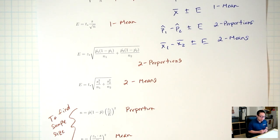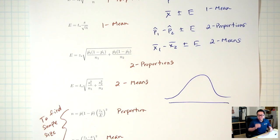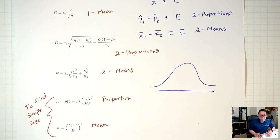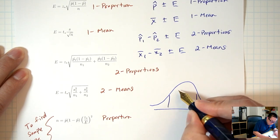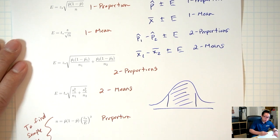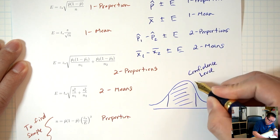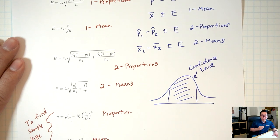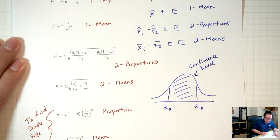All of these formulas involve either a z-star or a t-star. They all involve this picture — the same one we've been drawing for the last four or five chapters. For hypothesis tests, the picture could be left-tailed, right-tailed, or two-tailed. For confidence intervals, it's always going to be shaded in the middle, and the shaded area in the middle is the confidence level. Depending on whether you're talking about proportions or means, you're either finding the z-star or the t-star.